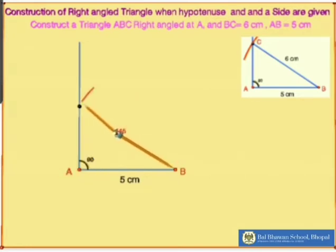So now from B as center, I am going to cut an arc of 6 cm on that ray such that it cuts the ray at point C.